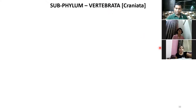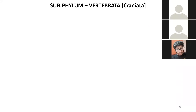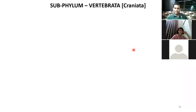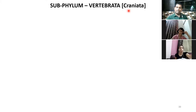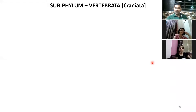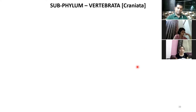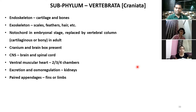In Vertebrata, instead of a notochord, the animals have a proper vertebral column — the notochord is divided into small bones called vertebral bones. Vertebrata are also commonly called Craniata, from the word 'cranium,' which is the brain box — the bones of the head which cover the brain. These animals have a proper cranium. Under Vertebrata, the classes are Cyclostomata, Pisces, Reptilia, Aves, and Mammalia. Their endoskeleton is either cartilage or bone.